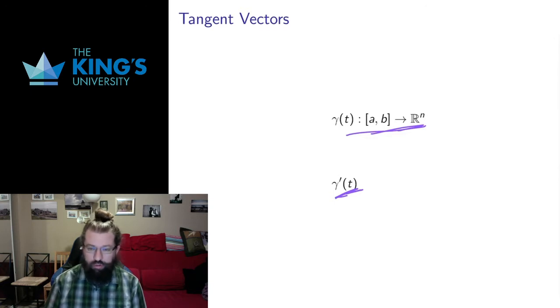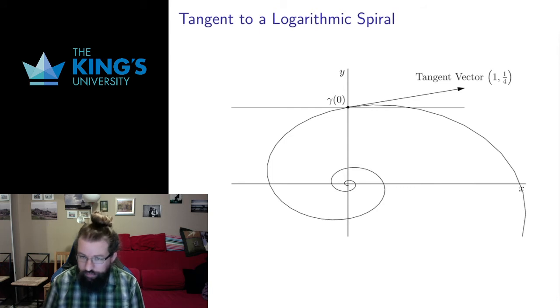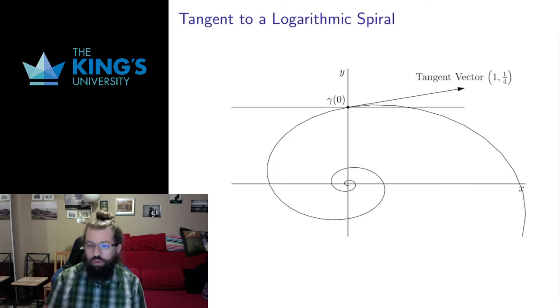So we get a vector derivative instead of a scalar derivative. A scalar derivative we can interpret as a slope. A vector is no longer a slope but it's a direction and that means that on a parametric curve the tangent vector is the local direction of movement at that point.